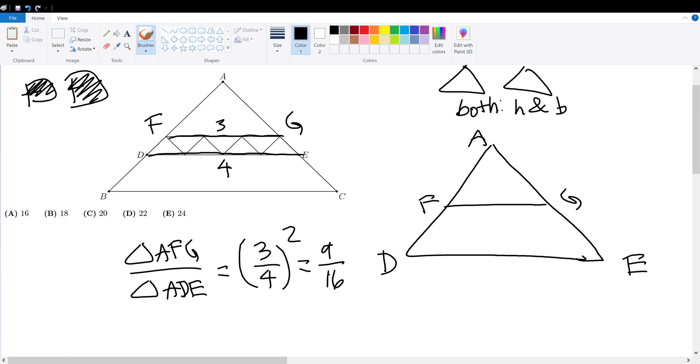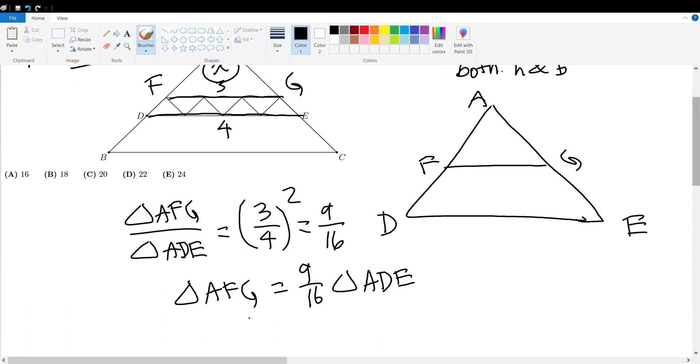So we have the relationship between AFG and ADE, which is that AFG, the small triangle, is 9/16th of the large triangle ADE. So if we set AFG's area to be equal to X, then that means ADE's area is just X plus 7, because each of the seven triangles have an area of 1. So X must be equal to 9 over 16 times X plus 7.